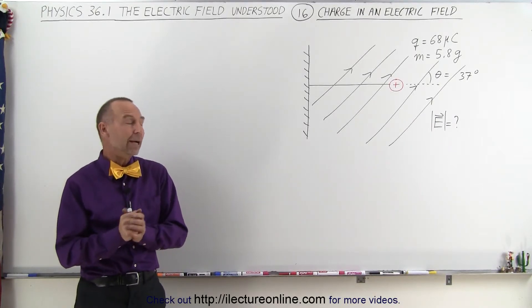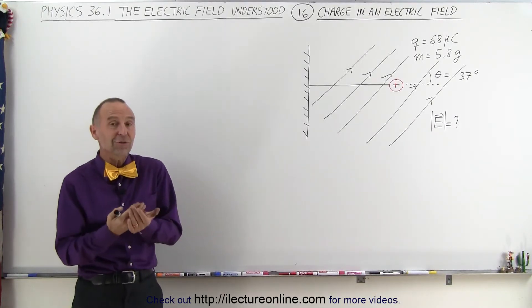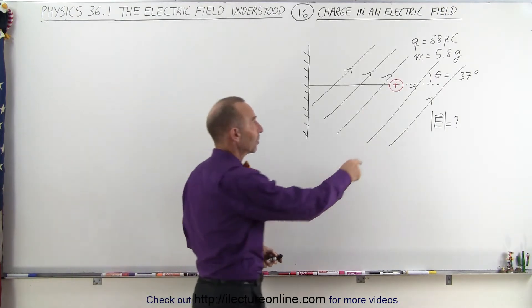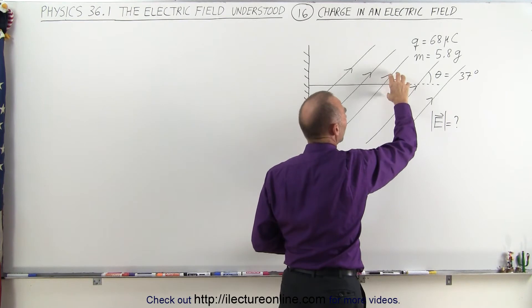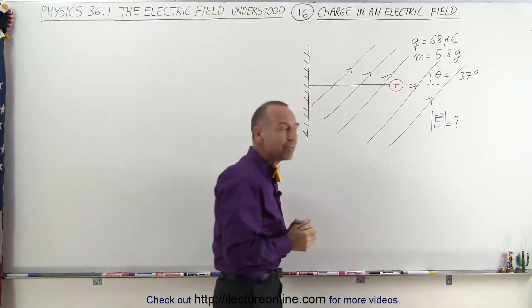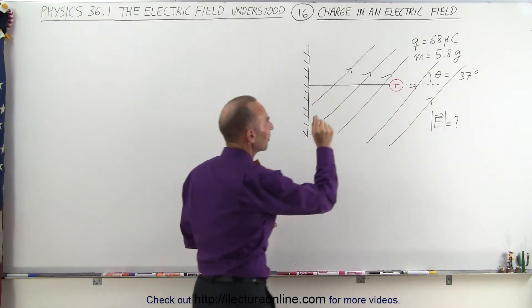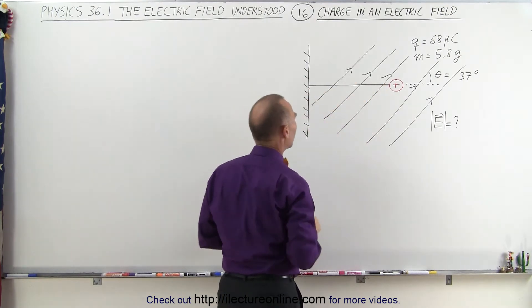Welcome to Electronline. Now here we have a very interesting contraption. We have a small object that has a mass of 5.8 grams that contains positive charge equal to 68 micro coulombs, but it's attached to a string and that string is attached to a wall.